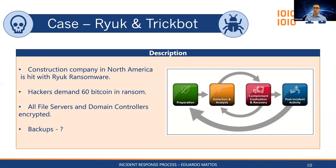Let's talk about a mock-up case. Ryuk is a very large ransomware gang that typically charges millions of dollars in ransom demands, hitting medium to large-sized companies worldwide. In this case, a construction company in North America was hit by Ryuk ransomware. The hackers demanded 60 bitcoin — though nowadays demands are far higher. All file servers and domain controllers were encrypted.